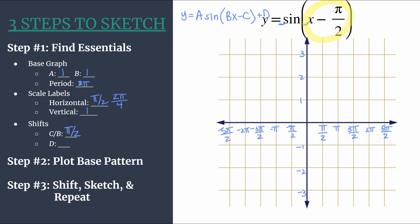Pi over two is our phase shift and it is positive pi over two because our general template is Bx minus C. So C itself is a positive value pi over two, so we should be moving right.